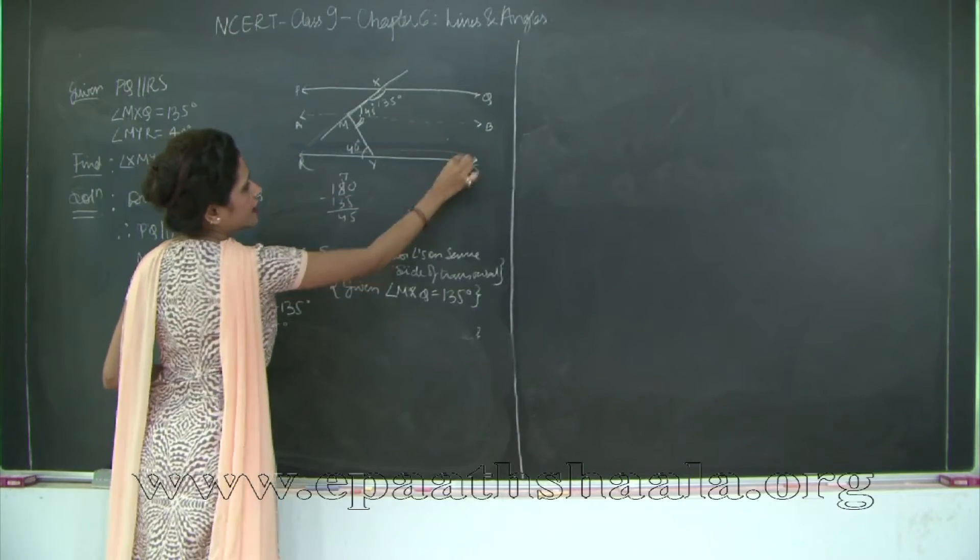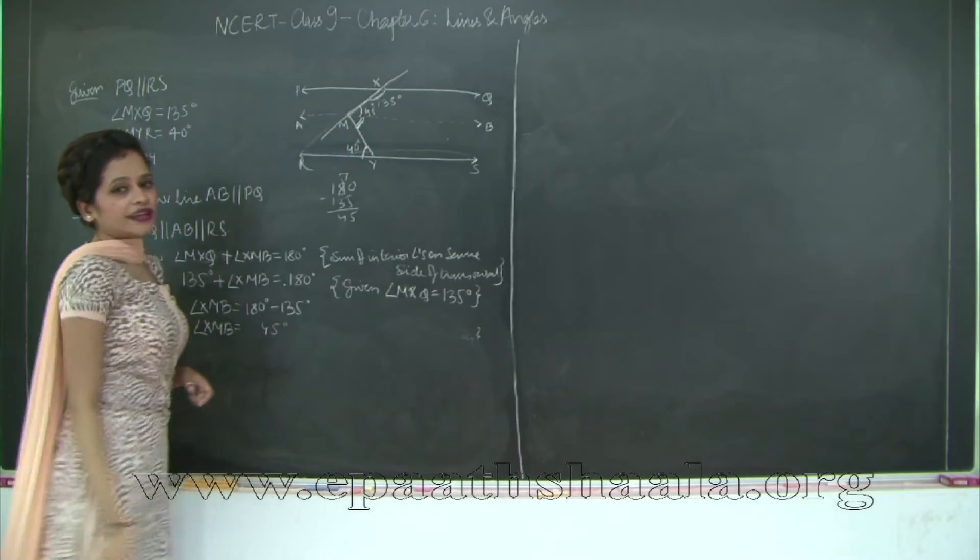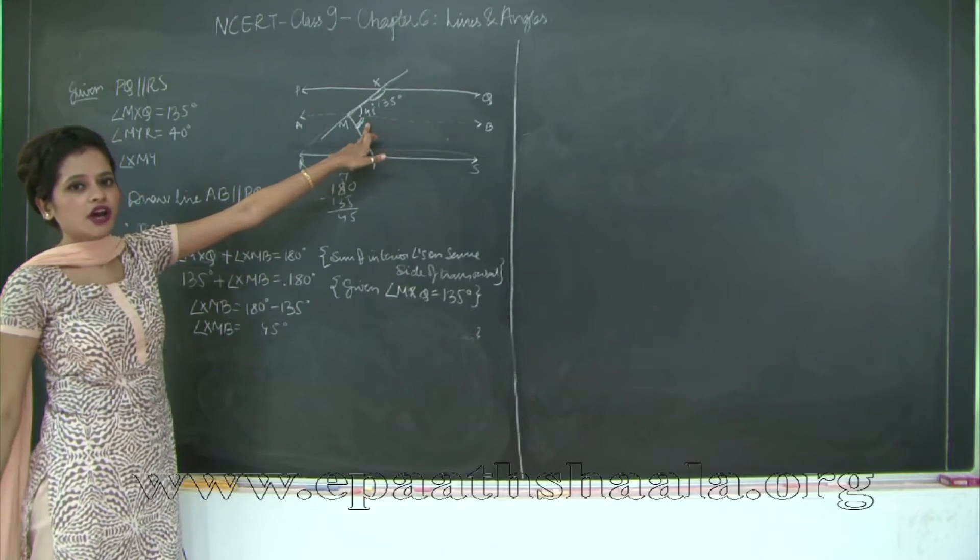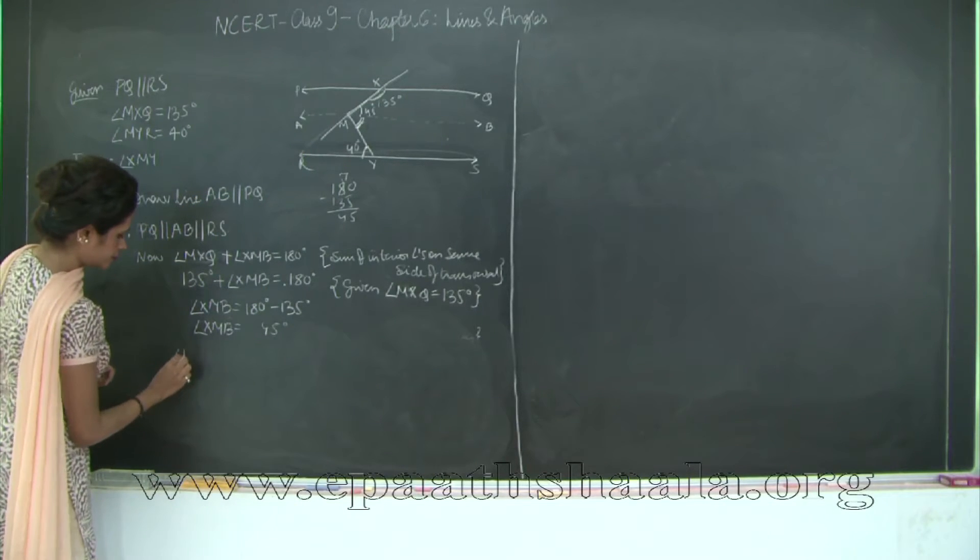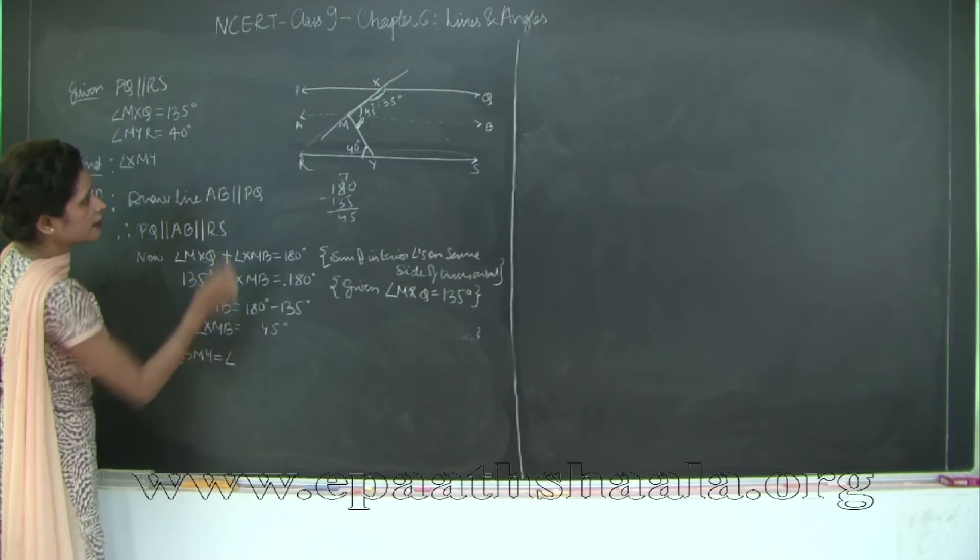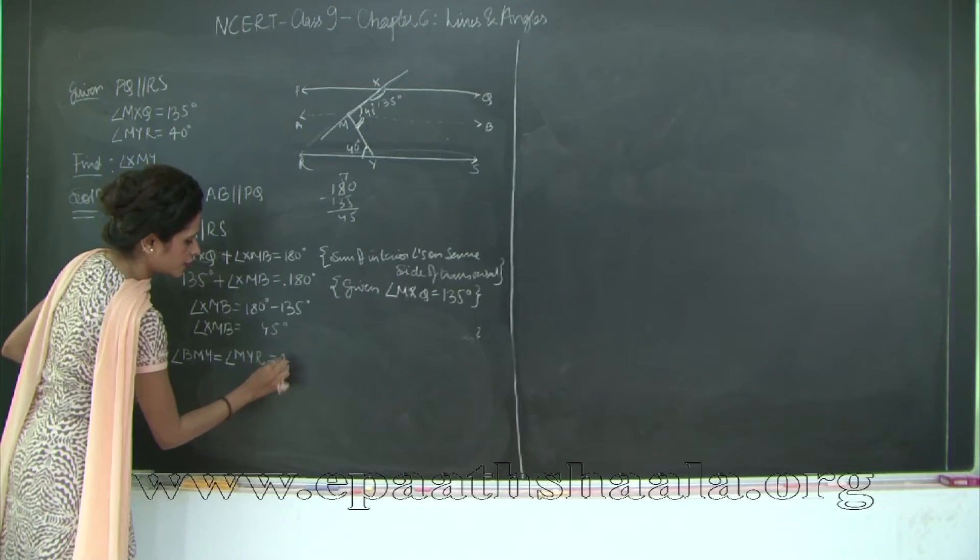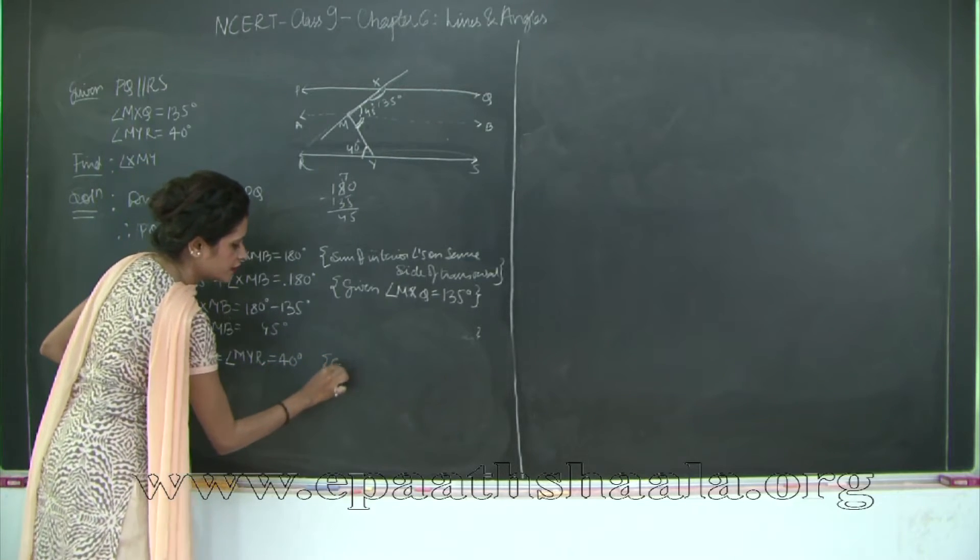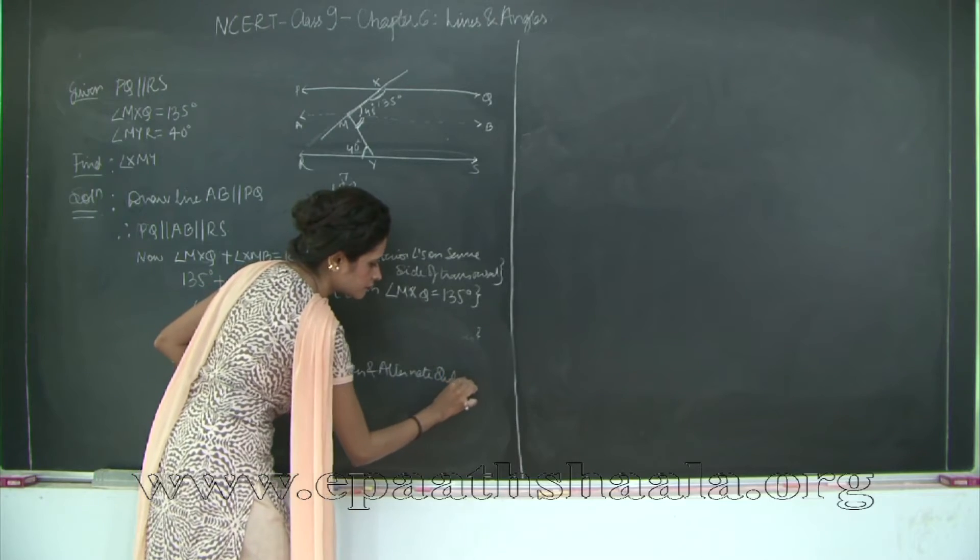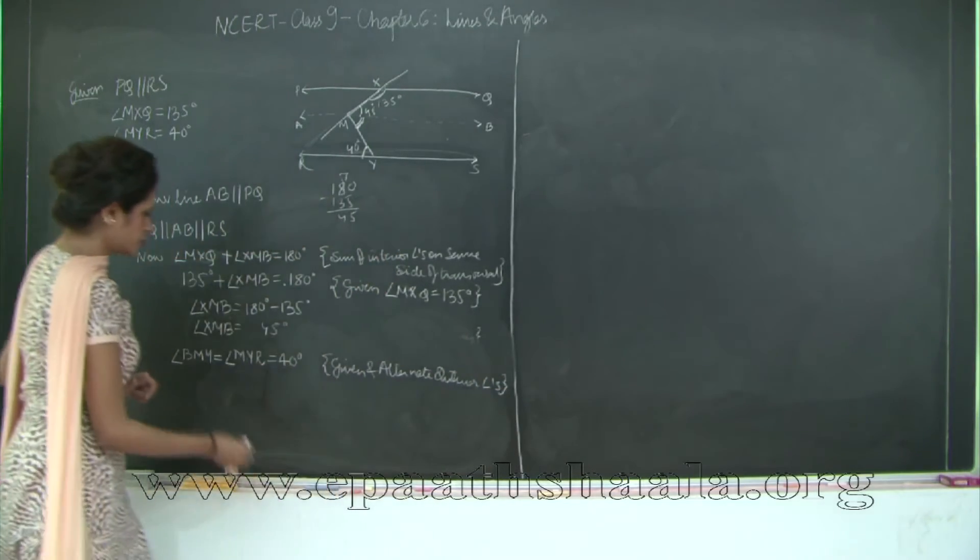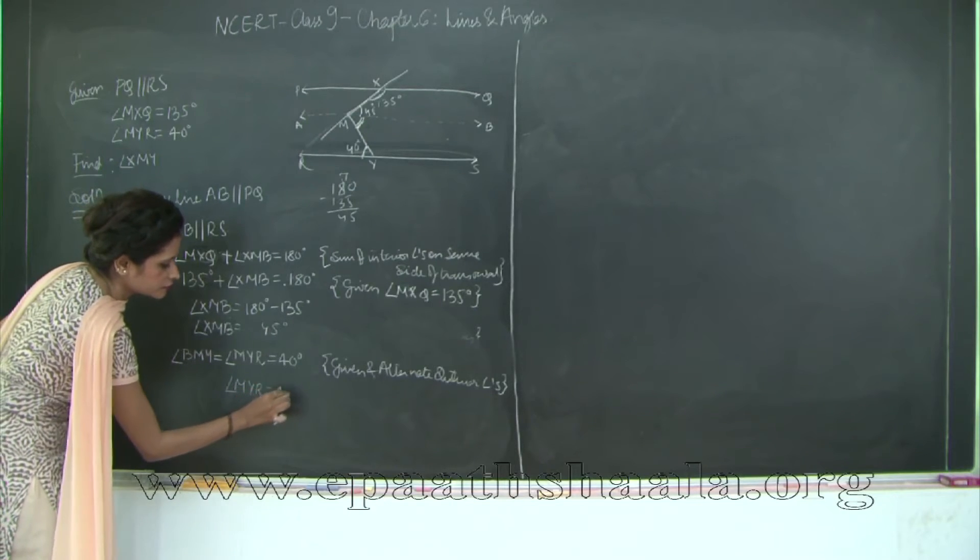Now, if you take the two parallel lines AB and RS, what do you get? This is alternate interior angles with this. And what have we learnt about alternate interior angles? They are equal. Therefore, this angle also becomes 40 degrees. So angle BMY is equal to angle MYR, which is equal to 40 degrees. From given and alternate interior angles.